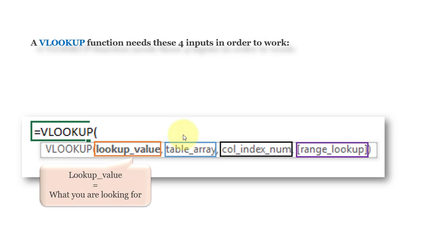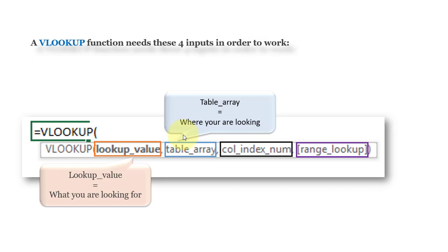Lookup value is what you are looking for in another table or range. Table array is where you are looking for the value. The table array always starts with the lookup value column, so the range of the table array always starts from the column which contains the lookup value.